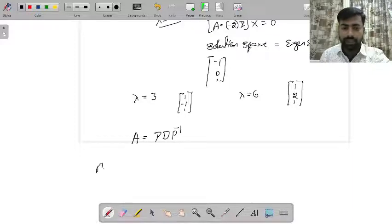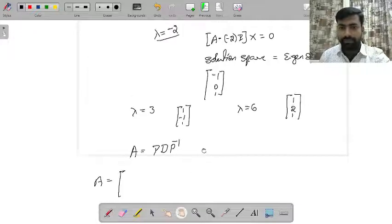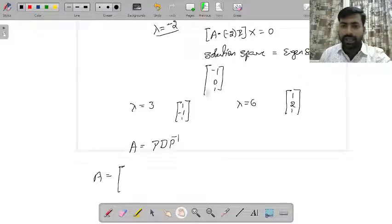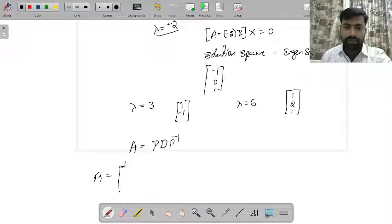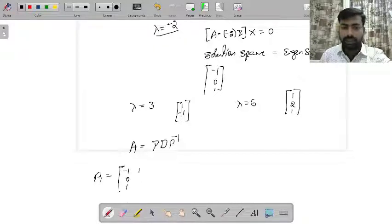And we can write what is A. A equal to P. P is nothing but you take these eigenvectors as columns of this matrix. So the first column is negative 1, 0, 1. The second, 1, negative 1, 1. Third, 1, 2, 1.